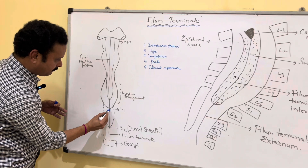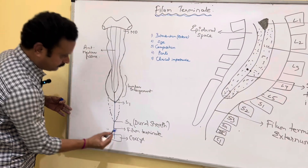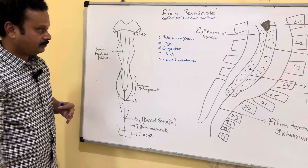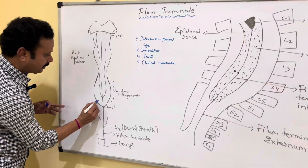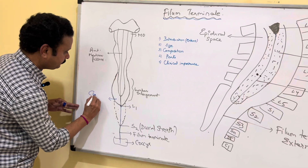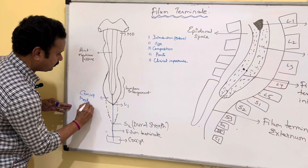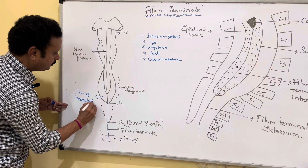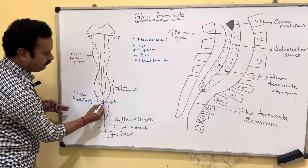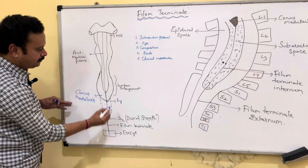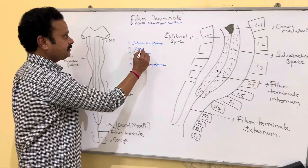This is the conus medullaris, and from here this is our filum terminale. Its extent is from the conus medullaris, which is the lower part of the spinal cord at the level of L1, to the coccyx — that is the filum terminale.